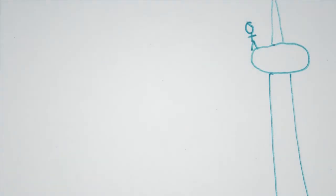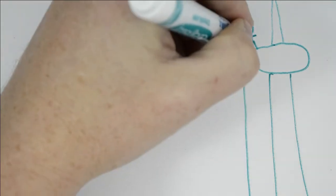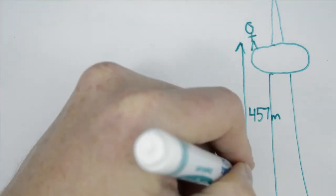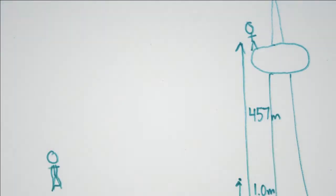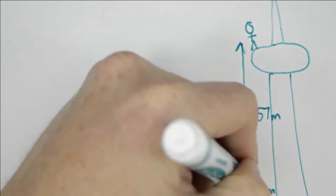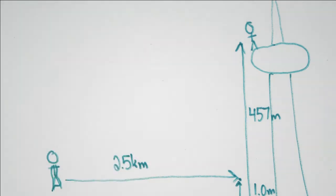And so we have the CN Tower, Lois Lane's at the top. Superman is standing off. We're going to put him to the left in this case, simply because that's how we've chose to draw the diagram. Lois Lane's going to be 457 meters above the ground, and she's going to be caught one meter above the ground. And Superman has 2.5 kilometers to fly.